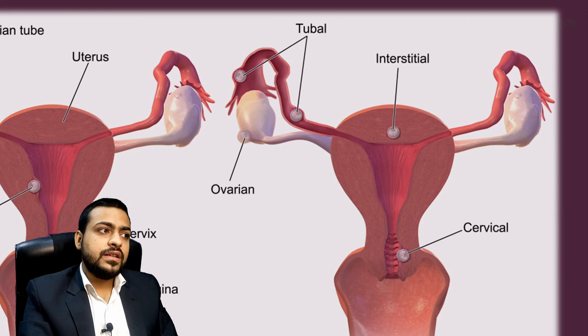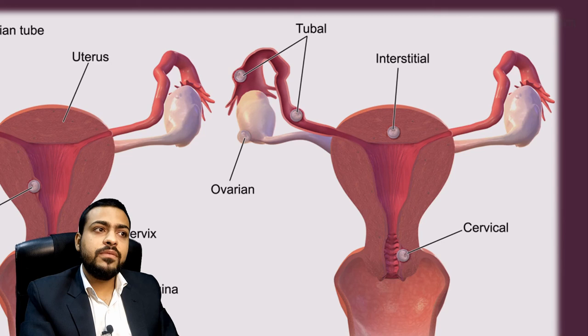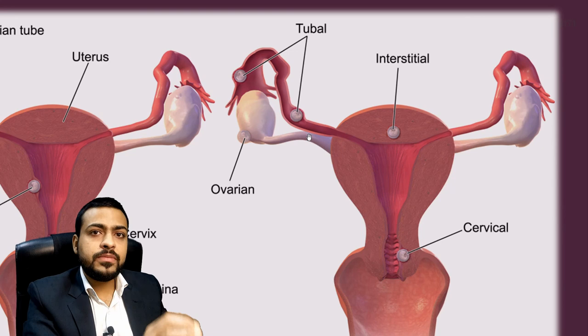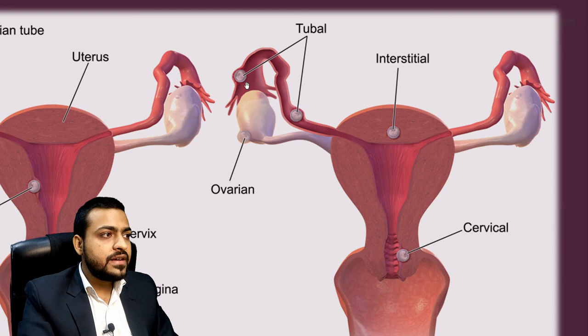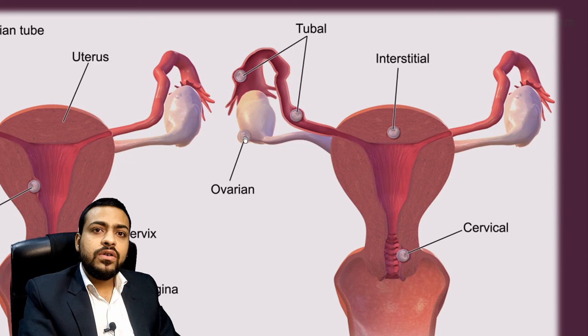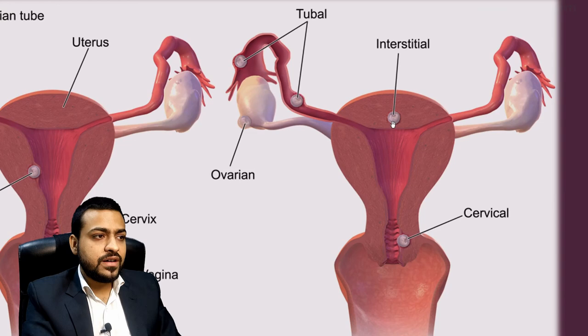Sometimes the fertilized egg may go back into the infundibulum of the tube, or even into the ovary, or it may fall into the abdomen — that is called abdominal ectopic pregnancy. Sometimes the secondary oocyte may fail to come into the ampulla and the sperm may fertilize it in the infundibulum or even in the ovary, and sometimes the zygote may fall back into the ovary. It may also implant at the cervix or in the interstitium of the body of the uterus. So this was about implantation and ectopic pregnancy. Thank you so much for watching this video.